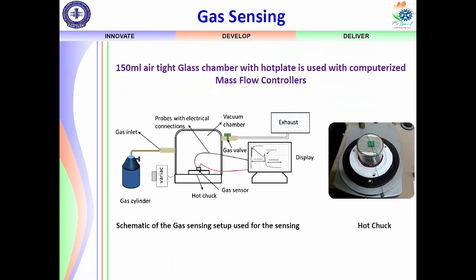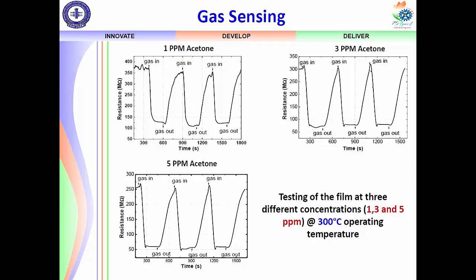Now comes the sensing part. The setup is a chamber where gas is passed through mass flow controllers (MFCs); the chamber is airtight with an inlet, outlet, and the sample placed inside. The required range for diabetes detection is 1 to a few ppm. Our sensor is sensitive enough to detect those low levels — we are able to sense 1 ppm, 3 ppm, 5 ppm, and even down to 100 ppb (0.1 ppm).